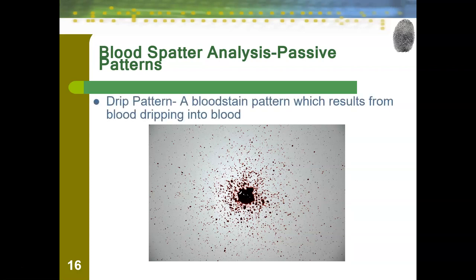This is compared to a drip pattern, which is a bloodstain pattern that results from blood dripping into blood. Once again, someone or something is staying still, but the blood is landing in the exact same place every time. For example, if blood was on a table and dripping over the edge, every time the blood would hit the floor, it's going to land in the same place and cause that overspray you're seeing around the edges.